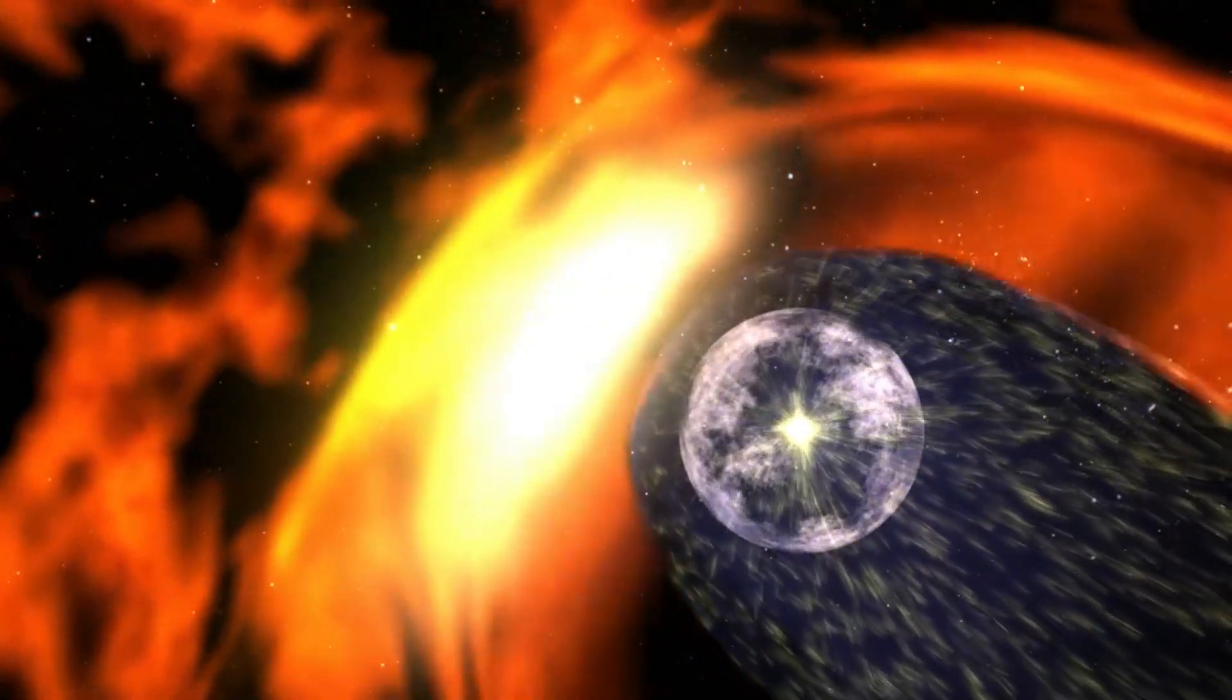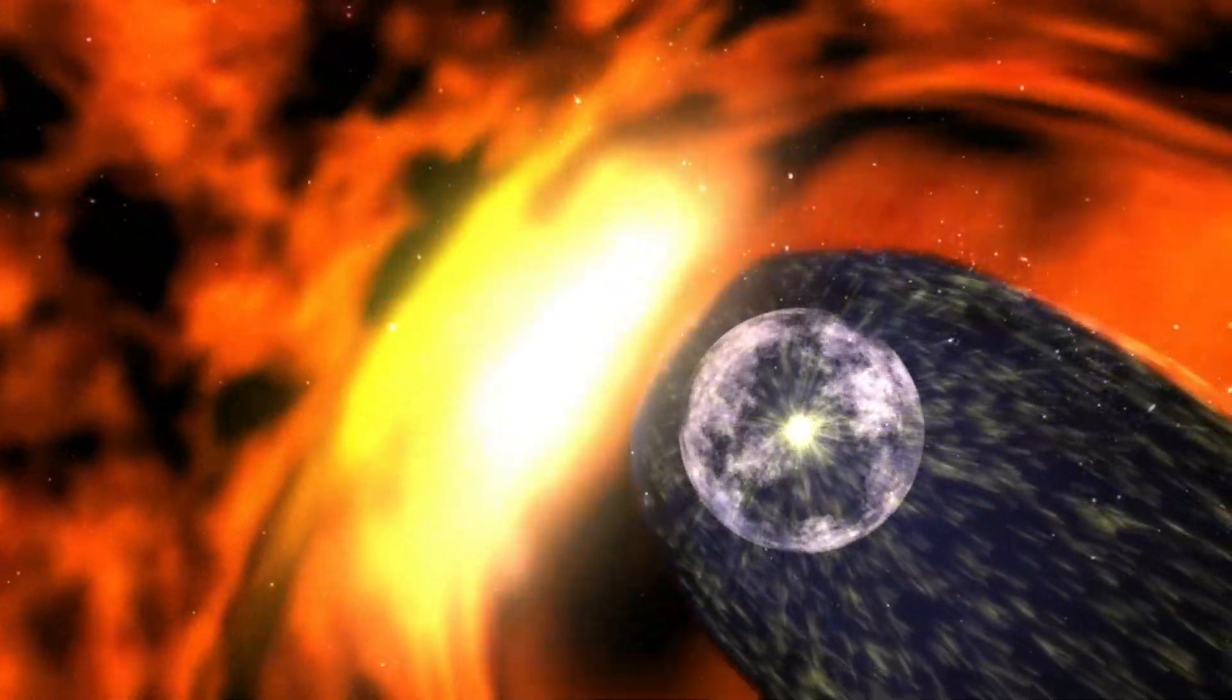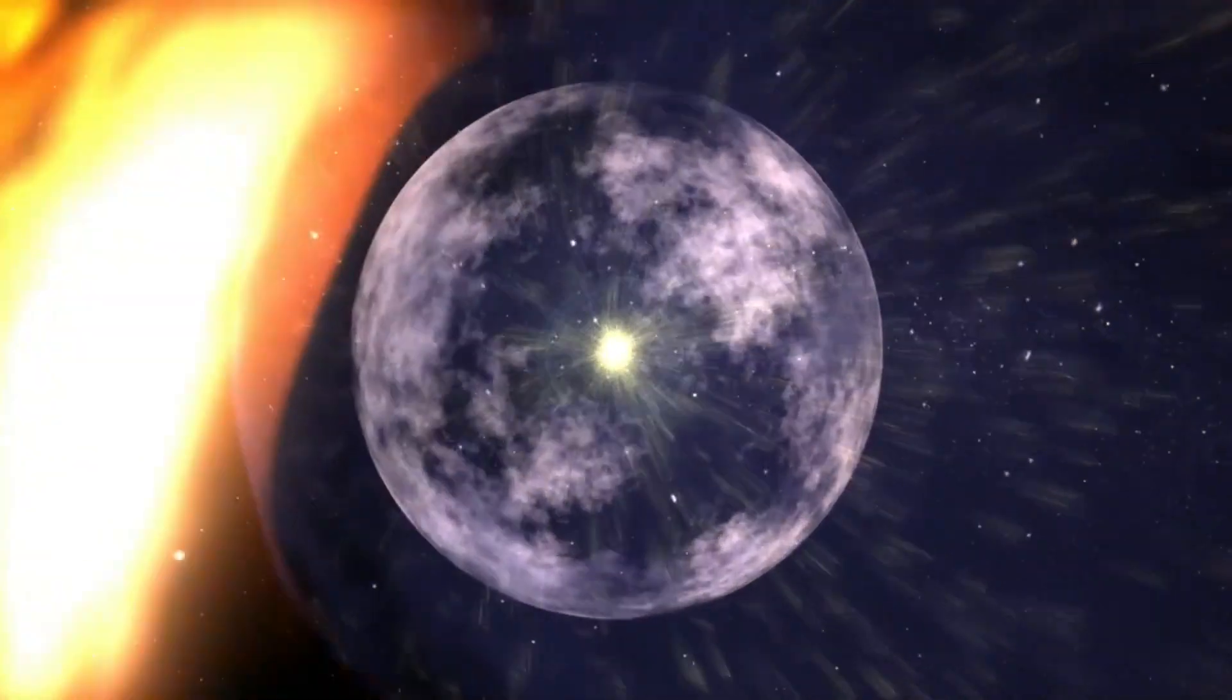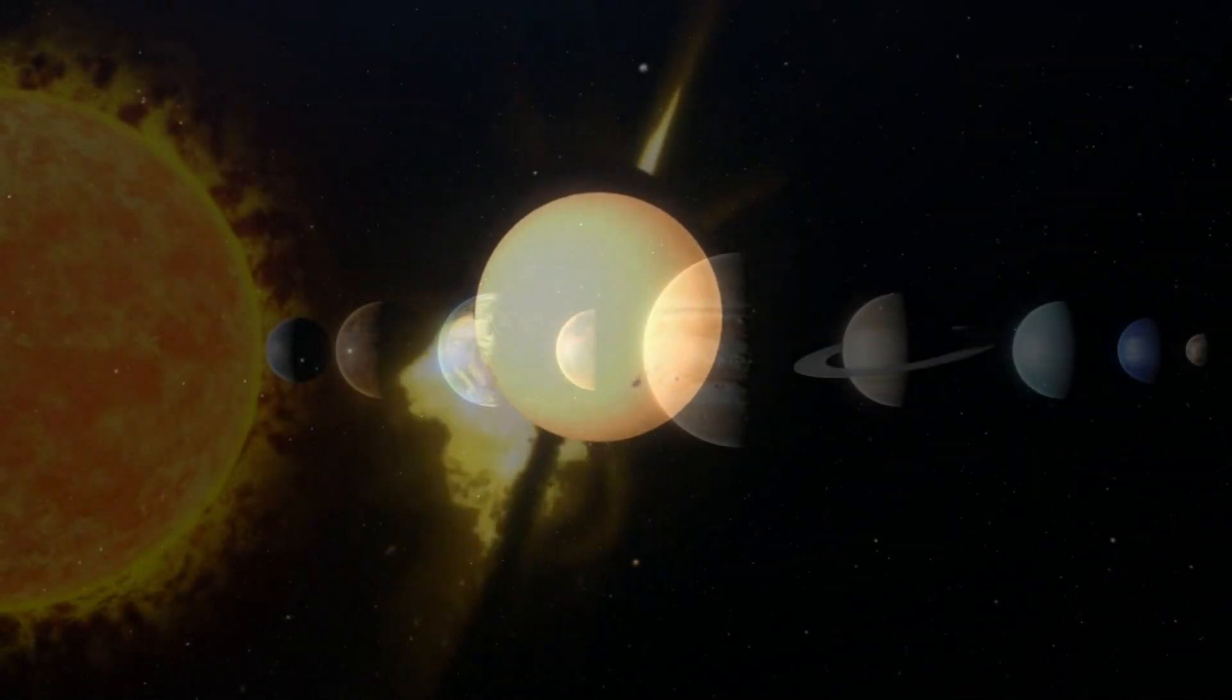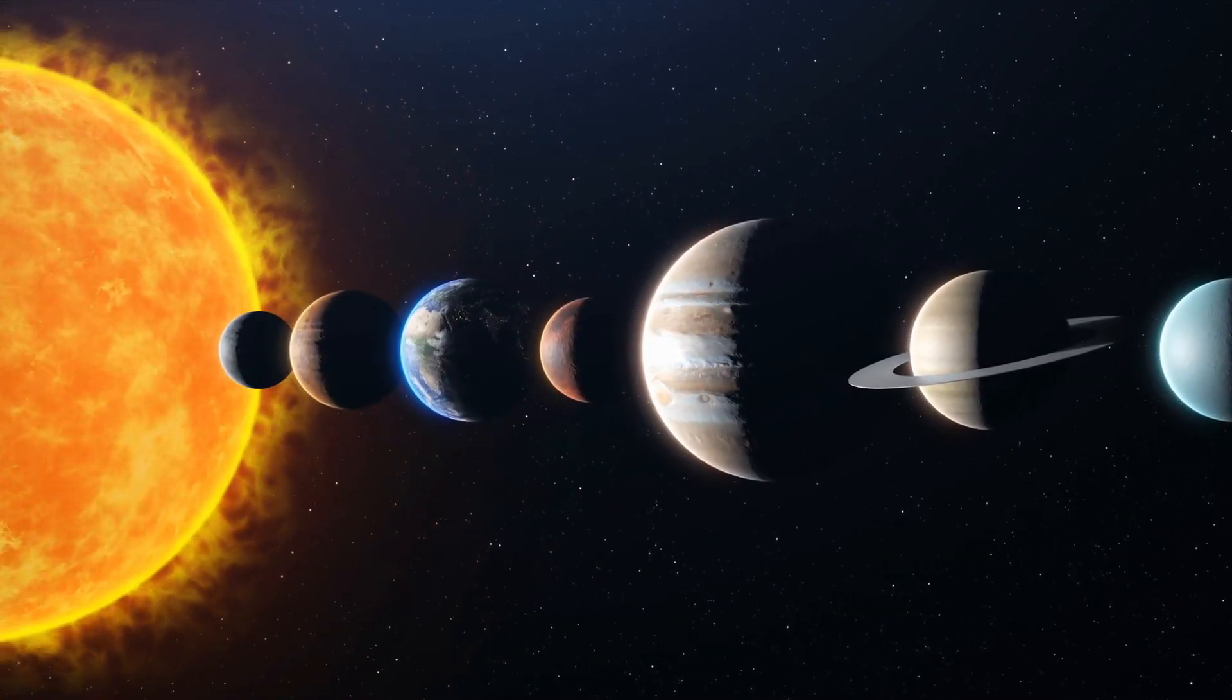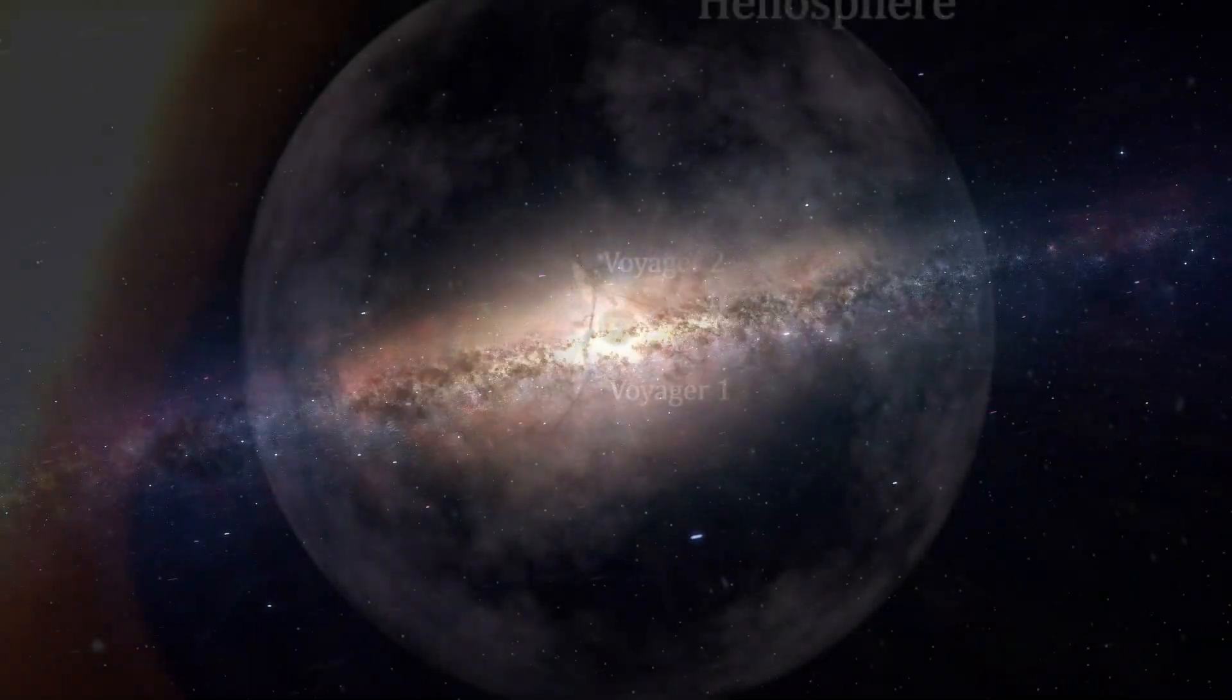Our solar system is protected from most cosmic rays from other galaxies by the heliosphere, which is like a big bubble. This bubble goes far beyond Pluto's orbit. It was made by the solar wind, a stream of charged particles coming from the sun. The Voyager data were very helpful in making maps of the heliosphere and figuring out how it interacts with the interstellar medium, which is made up of gas and dust between the stars in our galaxy.